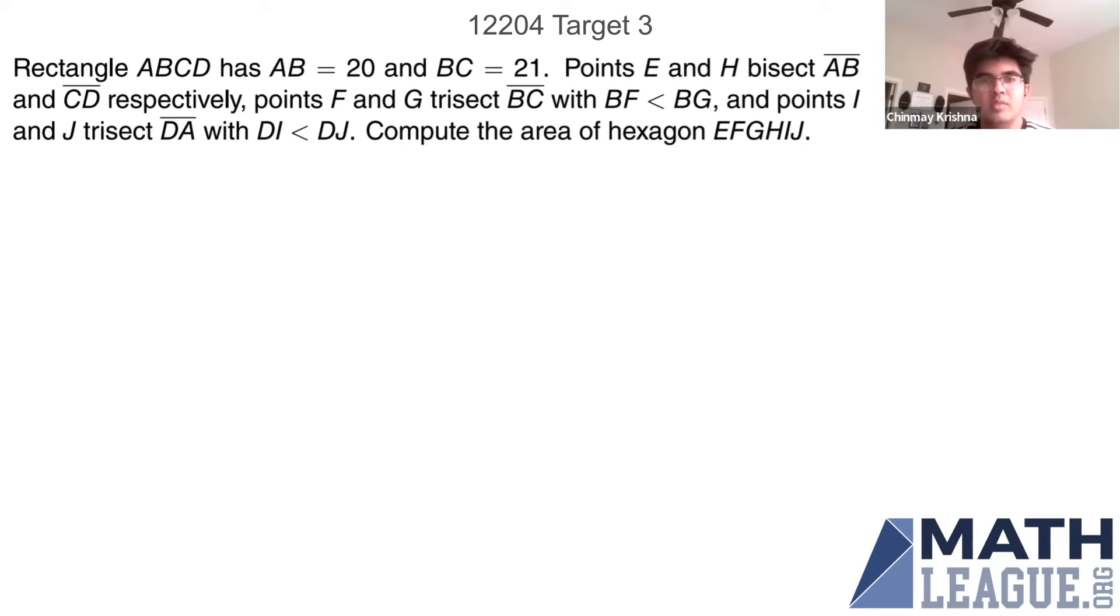I'll be going over target number three. Rectangle ABCD has AB equal to 20 and BC equal to 21. Points E and H bisect AB and CD respectively, and points F and G trisect BC. And I and J trisect DA.